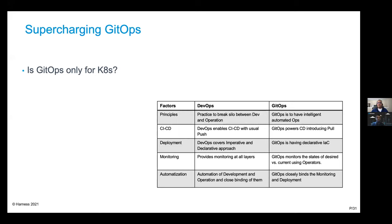Supercharging GitOps. One big question we hear: is GitOps only for Kubernetes? The answer is no — GitOps is not only about Kubernetes. If any system can be handled and managed declaratively and has convergence at some point, then GitOps is good for that. Take your ECS containers — we can absolutely do GitOps for ECS as well. It just depends how your containers have been designed and if they can converge at some time and be declarative.